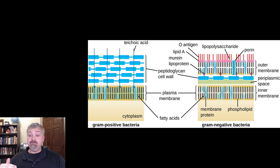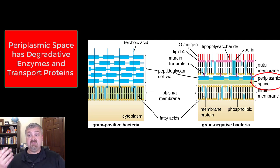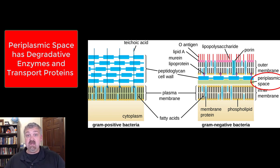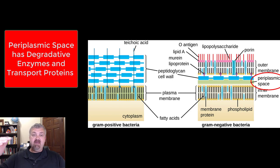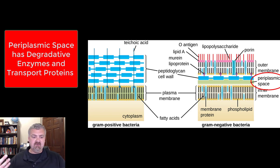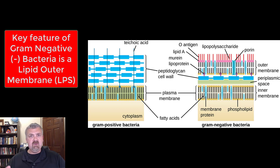Between the plasma membrane and the peptidoglycan cell wall in gram-negative bacteria is a space called the periplasmic space. In that space, you'll find degradative enzymes that can break down things trying to enter and destroy the cell — like antibiotics or chemical control agents. There are also transport proteins that can pump things back out.